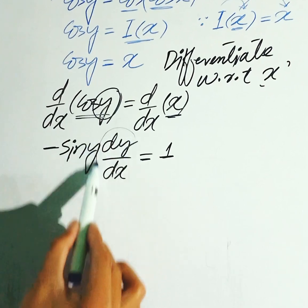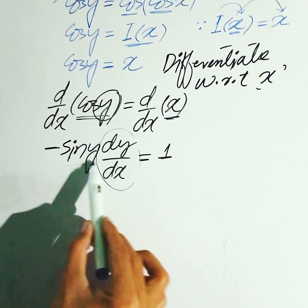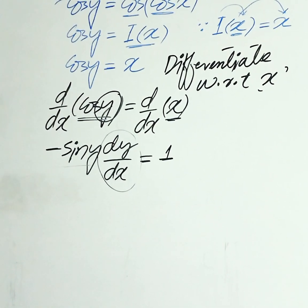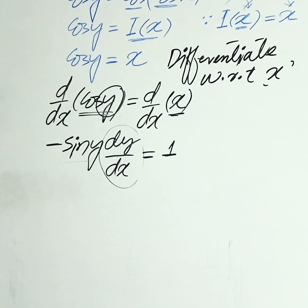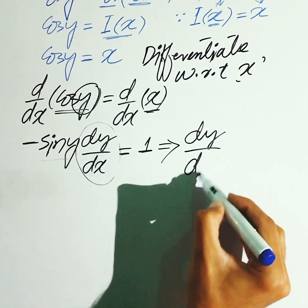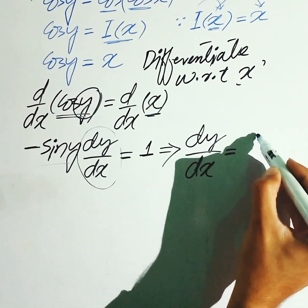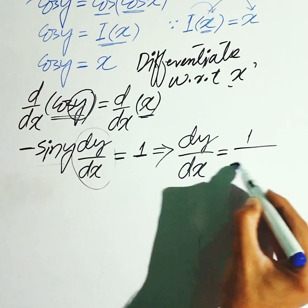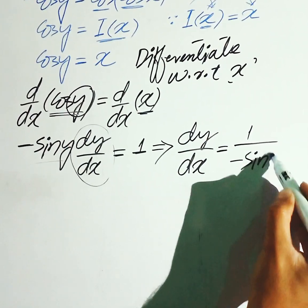Now, I'm gonna dy over dx for a note kerini hai hai, toh both side aap minus sin y pe divide kerini hai. So yahan se aaga, d over dx is equal to 1 divided by minus sin y.